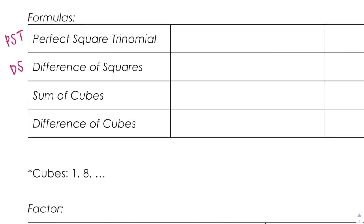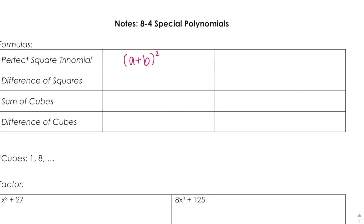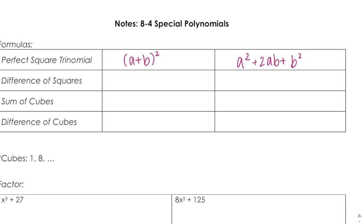A perfect square trinomial is whenever you have A plus B squared. Now, that's not A squared plus B squared — that does not equal that. That's a big no. What happens is you get A squared, the last term is B squared, but you have this middle term that's double AB. So for example, if you have X squared plus 14X plus 49, that's a perfect square.